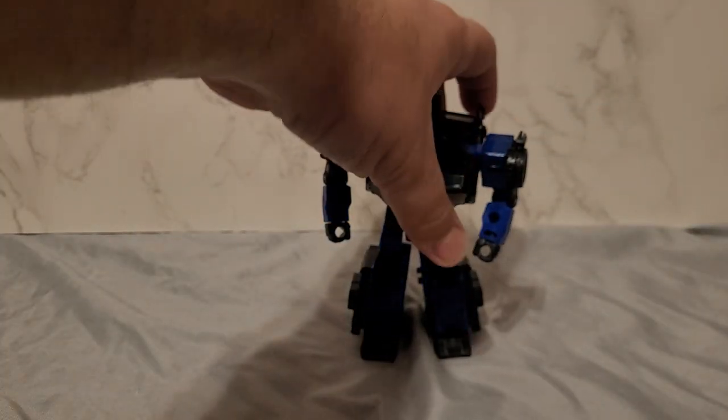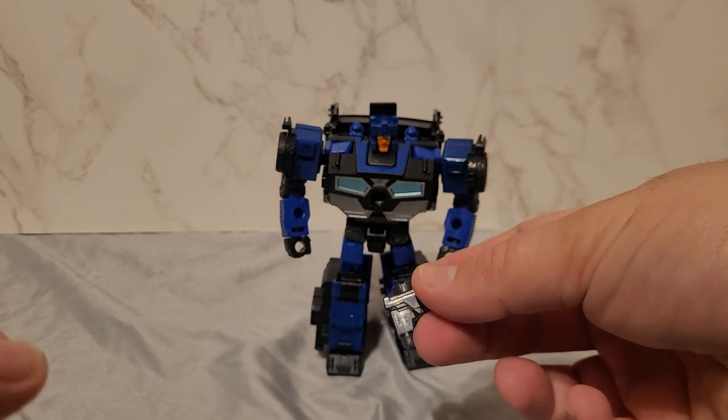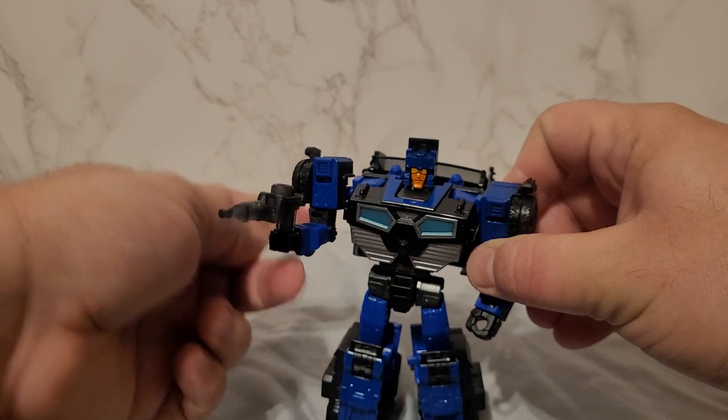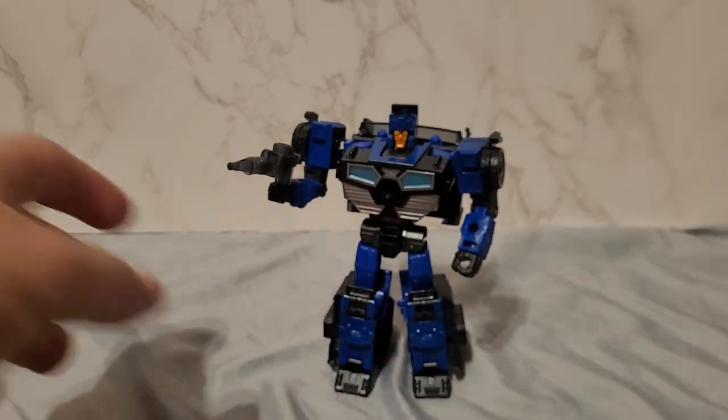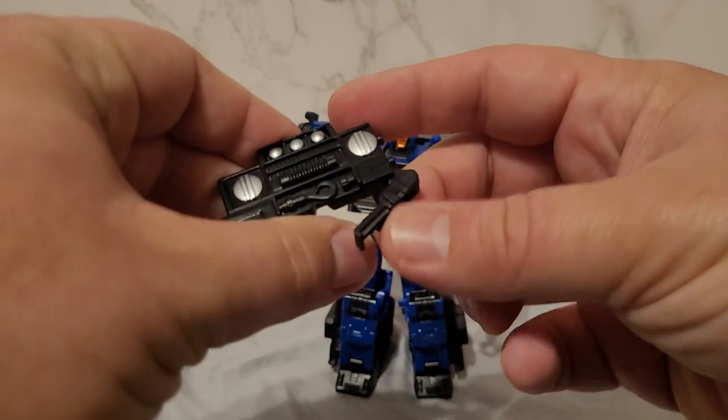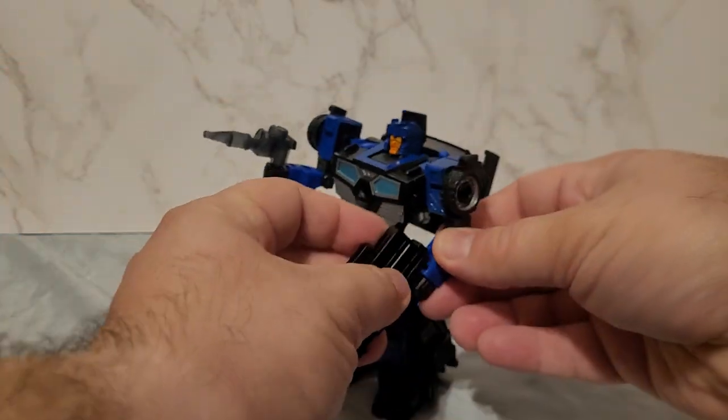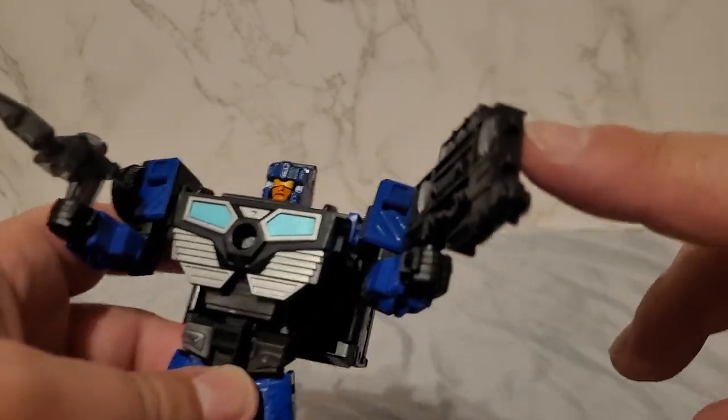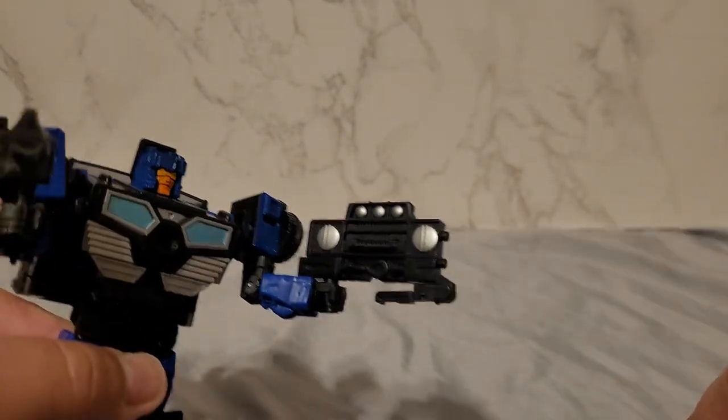Now we get to his accessories, which are his blaster which he just holds in one hand like so. Then you have this thing, his grill gun, which you fold out and he just holds it. He has little ports here so you can put effect parts on.